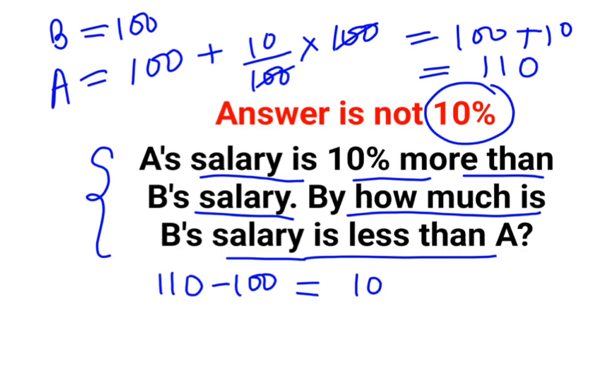Then they are saying by how much percent. So we need to see this entire difference has to get divided by whatever is getting compared to. It is compared to A's salary. So we have A's salary which is 110 into 100.